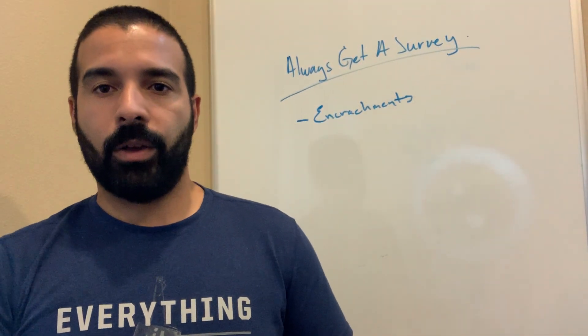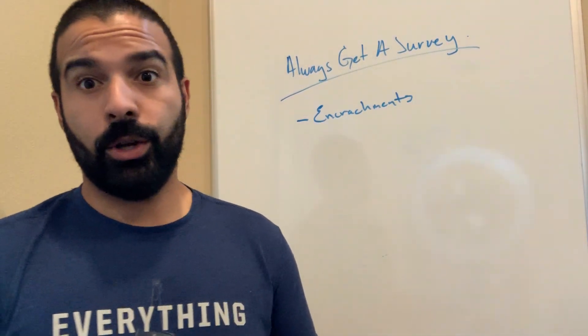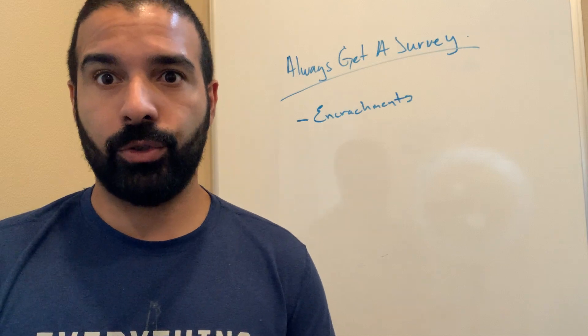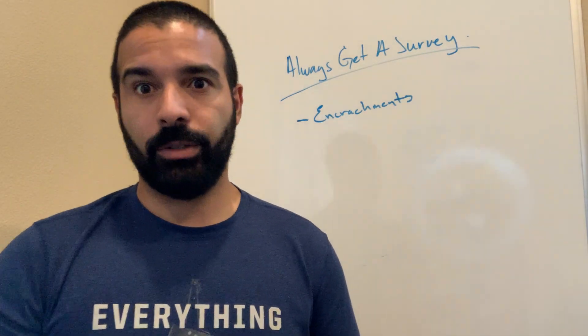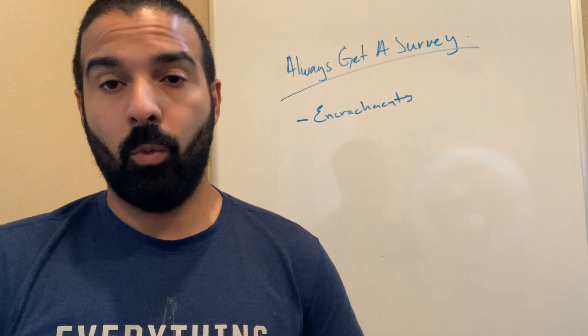Hey, this is Joel Aponta with MoveOnHouseBuyers.com, and in this blog I'm going to talk about encroachments. So how we almost got stuck with a property that we purchased for cash completely for $70,000 with clear title.